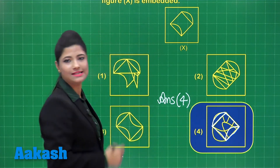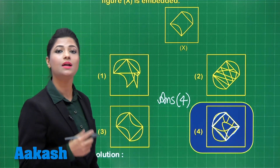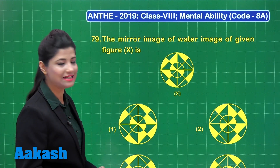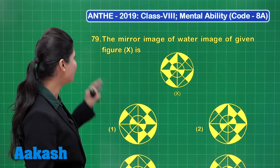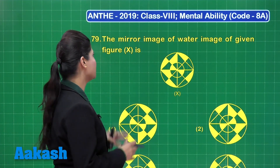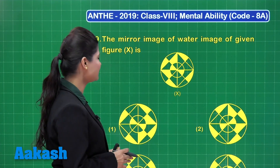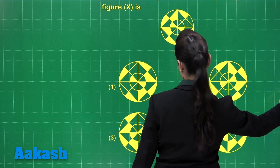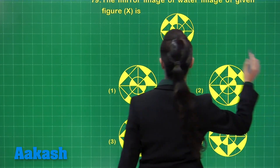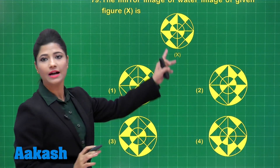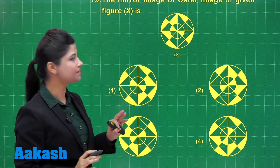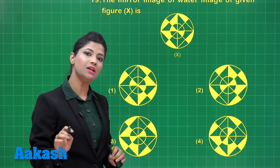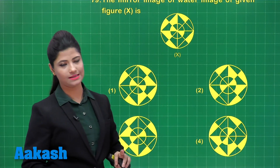By observation, you can mark the answer as option 4. I hope it is clear. Now let's solve question number 79. It states that the mirror image of the water image of given figure X is — out of these options. Here I have figure X, and you need to obtain the mirror image of the water image of figure X.